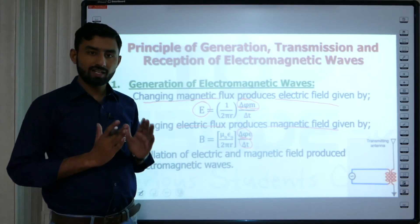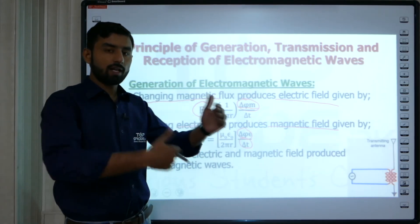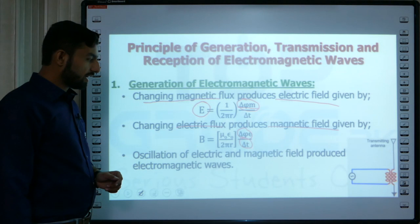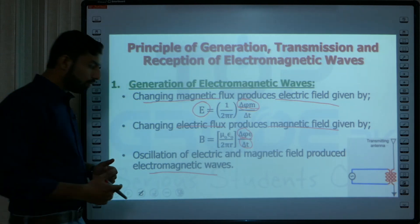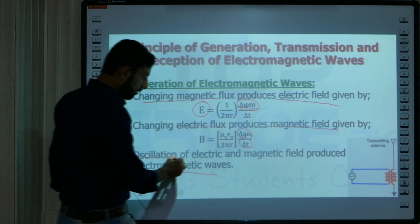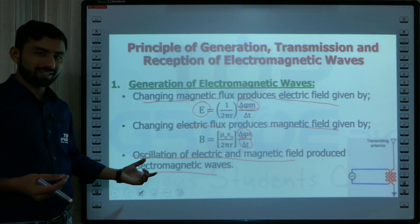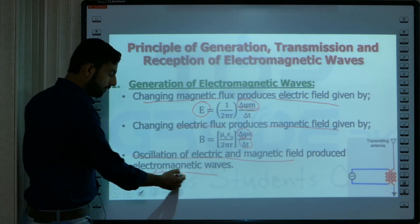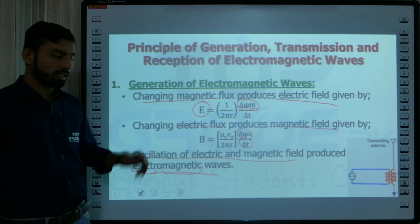This process repeats again and again: a changing electric field changes the magnetic field, then that magnetic field produces a changing electric field, and in the same way this process keeps repeating. The oscillation of electric and magnetic fields produces electromagnetic waves. This combination of changing electrical field and changing magnetic field — this oscillation — is actually what we call electromagnetic waves. It involves the phenomenon of electricity as well as the phenomenon of magnetism, so electromagnetic waves are oscillating electric and magnetic fields.